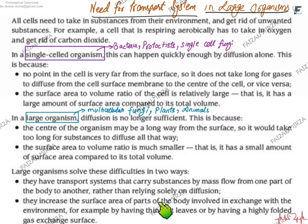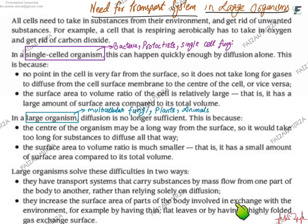Large organisms also increase the surface area of parts of the body involved in exchange. This is done by having thin flat cells, highly folded gas exchange surfaces such as alveoli, or thin regions in the capillary which allow quick gas exchange. So the total cross-sectional area available for exchange in large organisms is always very high for the regions involved in exchange, for example alveoli and capillaries.